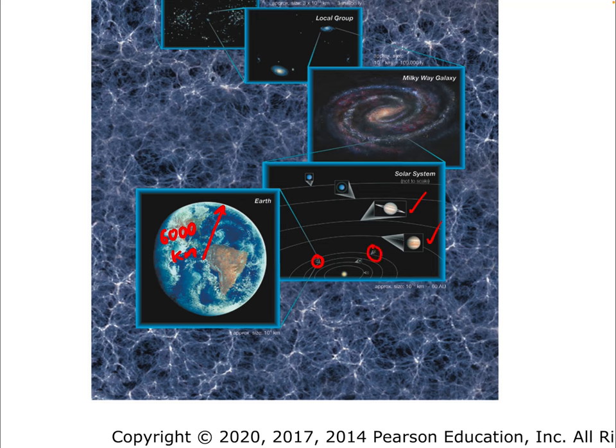The distances between planets are shown to scale, and there's relatively vast empty space between them. Our solar system is huge compared to our planet, but it's just a tiny piece of the entire Milky Way. Our solar system — named after Sol for Sun — is one of about a hundred billion potential solar systems in the entire galaxy, because there are about a hundred billion stars.